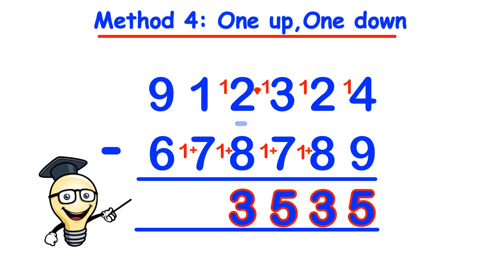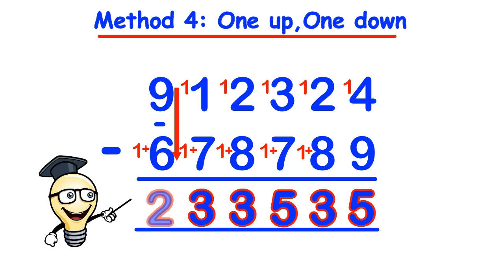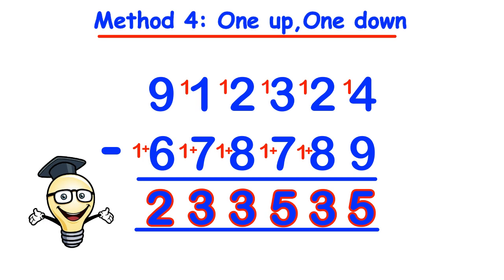Moving on to the next column we have 1 take away 8 which cannot be done so we do 1 up 1 down. Now the top becomes 11 take away 8 and that gives us 3. Finally we have 9 take away 7 since the 1 plus 6 became 7. So 9 take away 7 is 2 so the answer is 233,535.